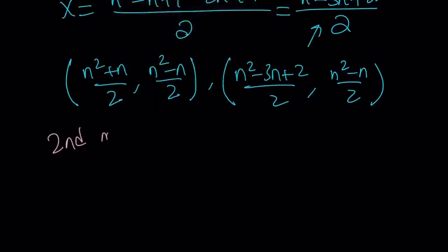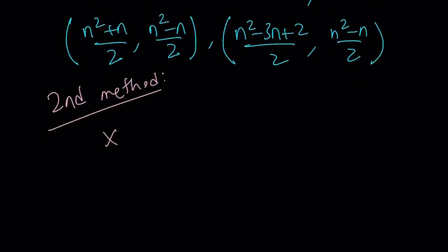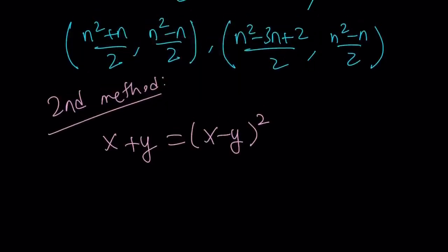My second method is definitely shorter and it's a really cool method, but it doesn't always work — sometimes it does work nicely. The quadratic approach is the more general method, which is why I showed it first. Here I'm going to use substitution, which is very powerful. I'm going to replace x minus y with k, where k is an integer — since x and y are integers, their difference is also an integer. By this substitution, since x minus y is k, x plus y is going to be k squared.